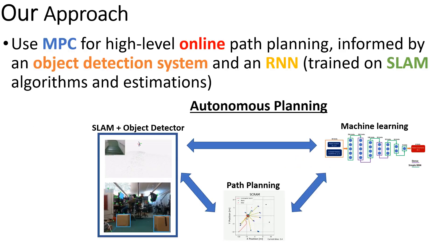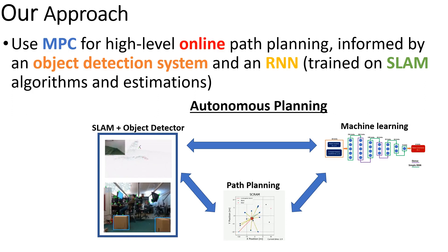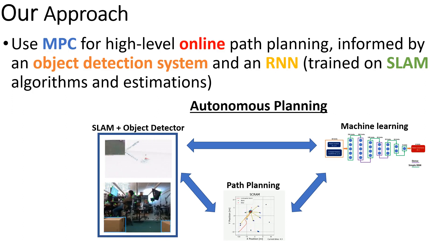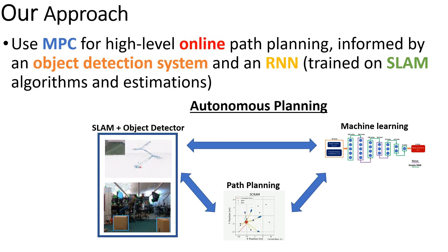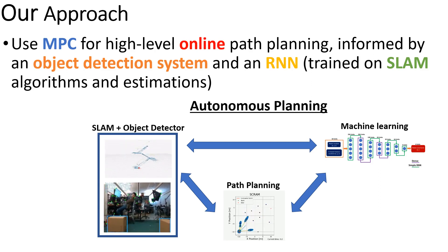Our overall approach is to use model predictive control, or MPC, for high-level online path planning, which will be informed by an object detection system for collision avoidance and an RNN to predict the covariance of future states by being trained on SLAM algorithms and estimations.